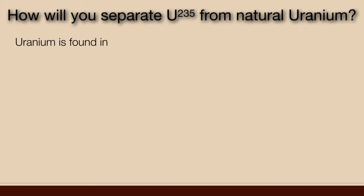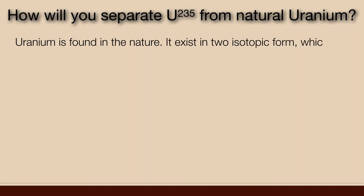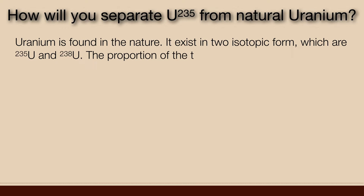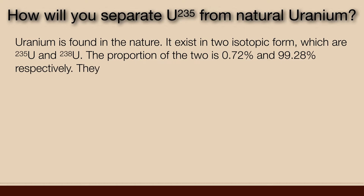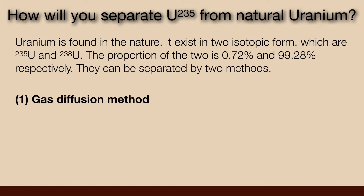Uranium is found in nature. It exists in two isotopic forms: uranium-235 and uranium-238. The proportion of the two is 0.72% and 99.28% respectively. They can be separated by two methods: one, gas diffusion method, and second, chemical exchange method.